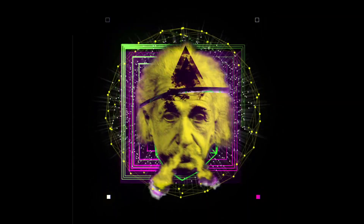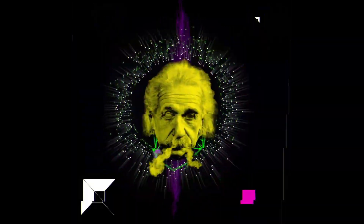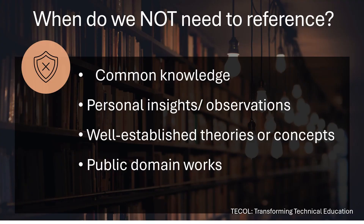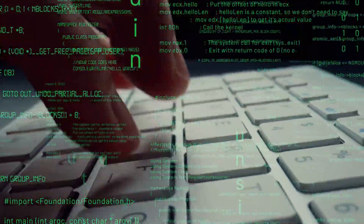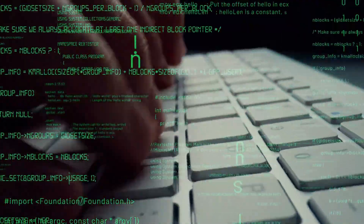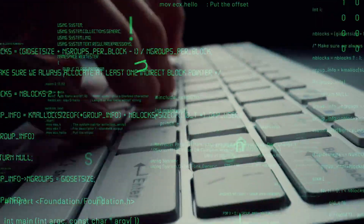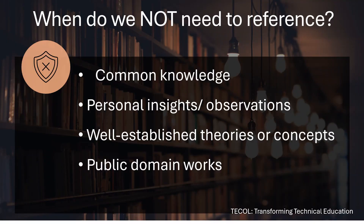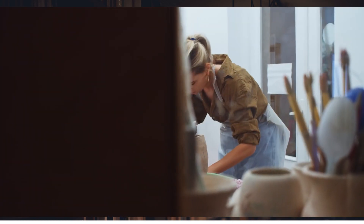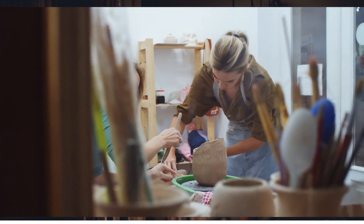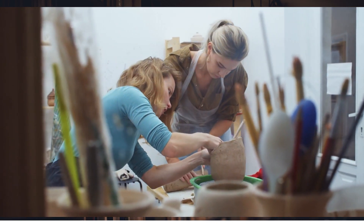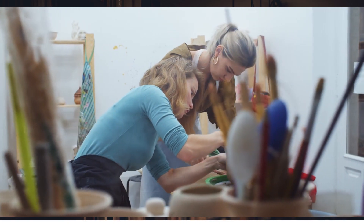Public domain works don't need to be cited legally or academically; however, for the purposes of our assessments, even if you get something from a public domain source such as a YouTube video or an open source site, we still want you to provide the reference because it shows you are doing your own research. Finally, if you create a graphic, draw a circuit diagram, or anything like that from your own head — along with personal insights — it's your own work and you don't need to cite it.